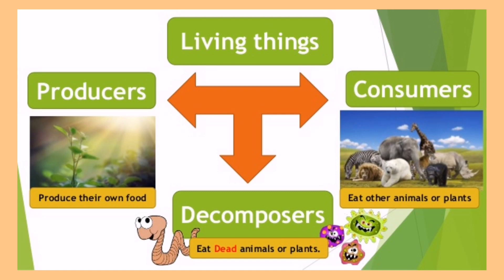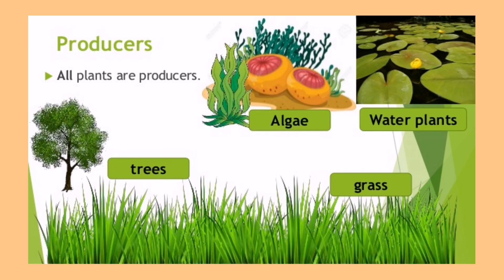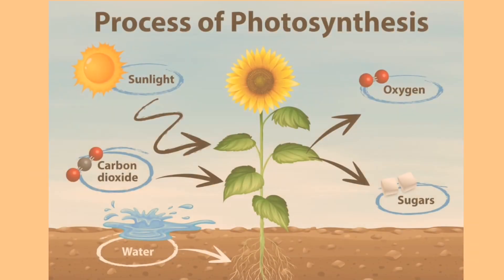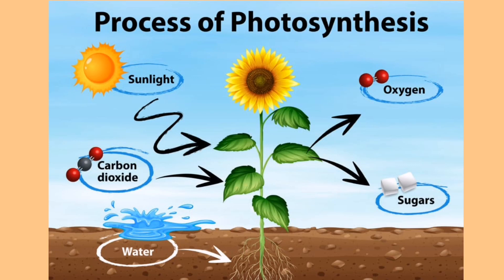Based on that classification, we need to identify what kind of organisms these are. First, what are producers? Producers are organisms that use energy to make food — but how? Through the process of photosynthesis. Photosynthesis is the process where plants make their own food, and to complete this process, plants need carbon dioxide, water, and light or sunlight.